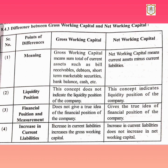Fourth point: increase in current liabilities. An increase in current liabilities increases the gross working capital, whereas in net working capital, an increase in current liabilities does not increase net working capital. That means if current liabilities of any company increase, gross working capital increases too; but for net working capital, an increase in current liabilities does not cause an increase in net working capital.